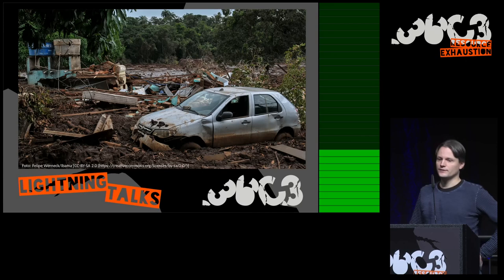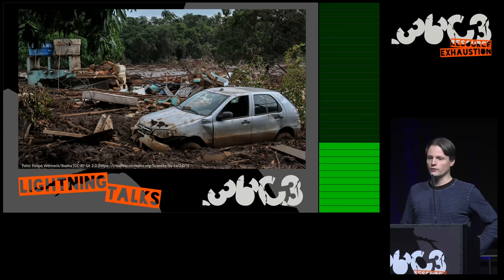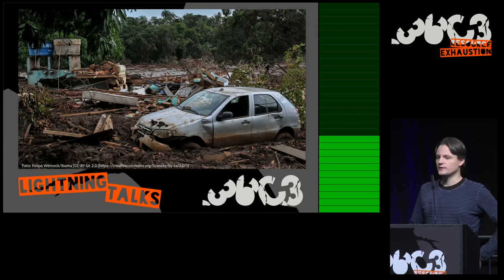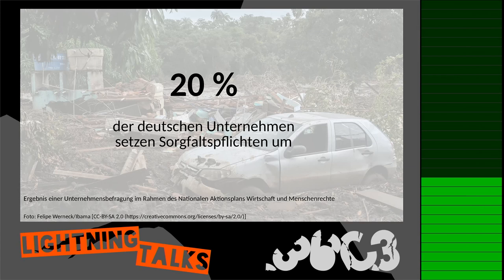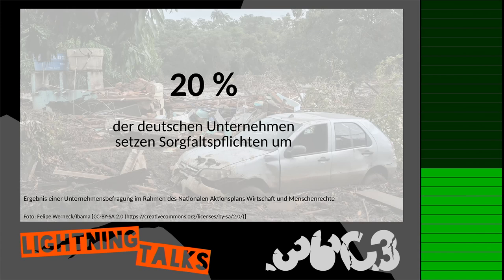Für die Opfer bzw. deren Angehörigen ist es bislang sehr schwer und kompliziert, gegen den TÜV Süd gerichtlich vorzugehen, weil sie offensichtlich nicht sorgfältig gearbeitet haben — die Angehörigen sitzen in Brasilien, der TÜV Süd in Deutschland. Die Bundesregierung hat eine Umfrage unter deutschen Unternehmen durchgeführt, ob sie menschenrechtliche Sorgfaltspflichten entsprechend der gängigen Regelwerke umsetzen. Von den Unternehmen, die geantwortet haben, tun das ungefähr 20%. So viel zum Stand der Menschenrechte in der deutschen Wirtschaft.